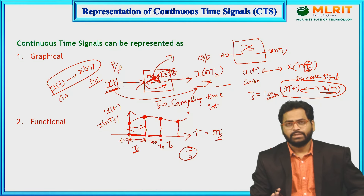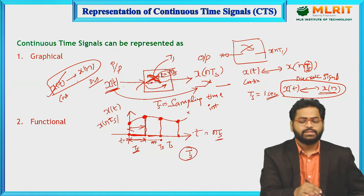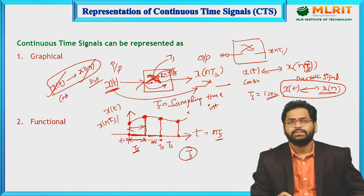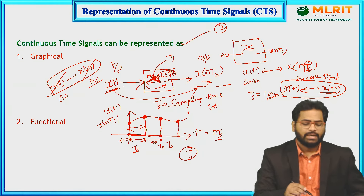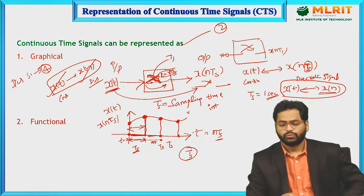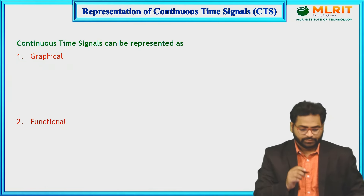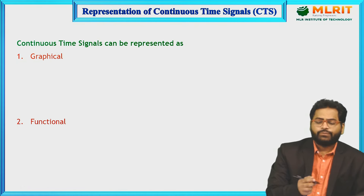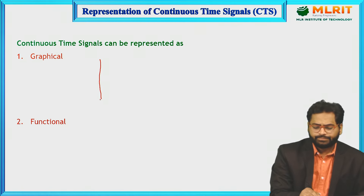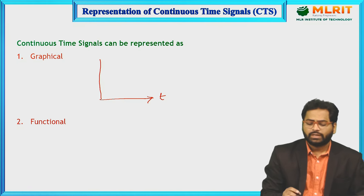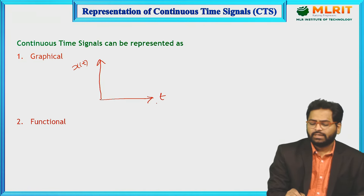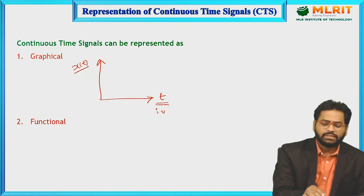We will have two kinds of signals: one is a continuous signal x(t) and the other is the discrete signal x(n). Continuous signal can be represented in two ways, and the discrete signal can be represented in four ways. The first one is the graphical method.